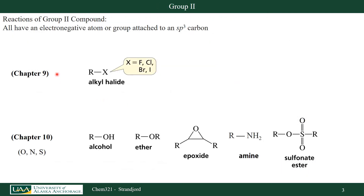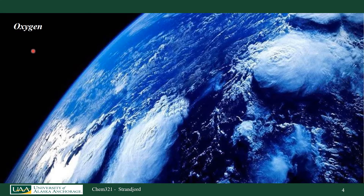In Chapter 9, we talked about nucleophilic substitution and elimination reactions using alkyl halides. In Chapter 10, we're going to do much the same thing — mostly substitution and elimination reactions of alcohols, ethers, epoxides, some amines, and some sulfur-containing compounds. So let's first talk about oxygen-containing compounds: our alcohols, ethers, and epoxides.